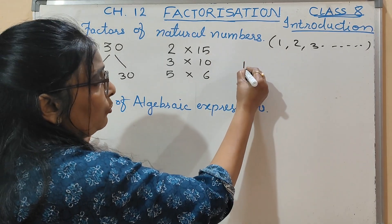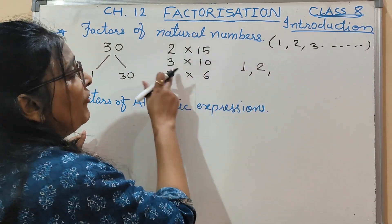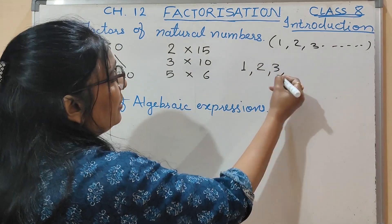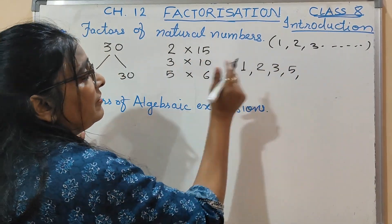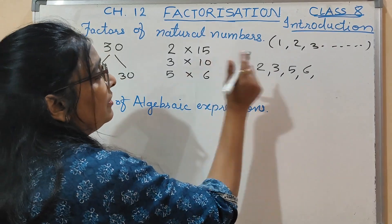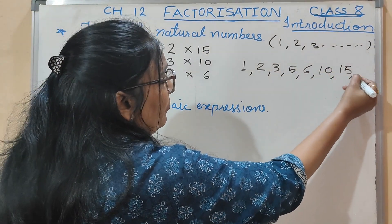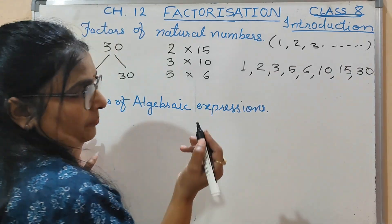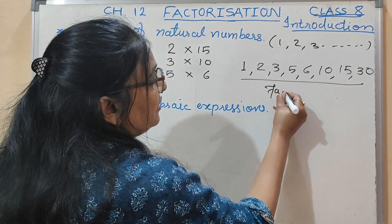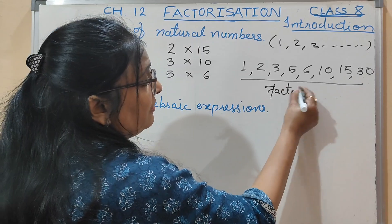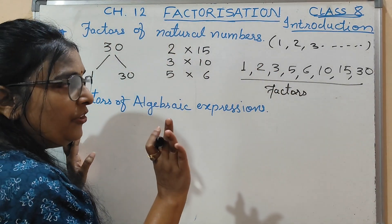So the factors of 30 are: 1, 2, 3, 5, 6, 10, 15, and the number itself — 30. These are the factors of 30.